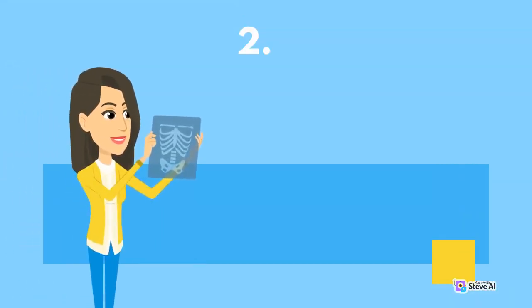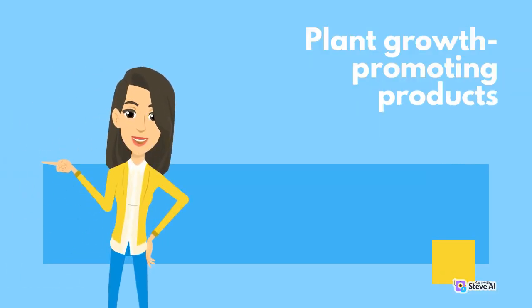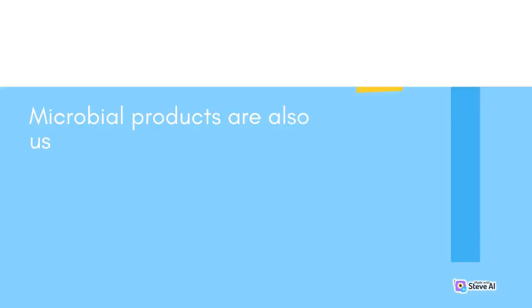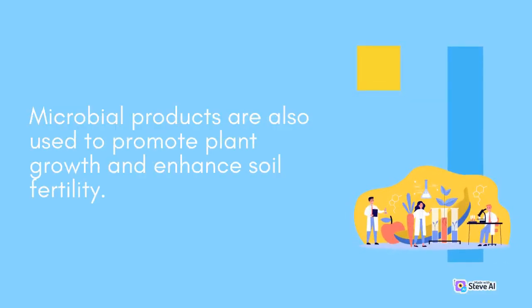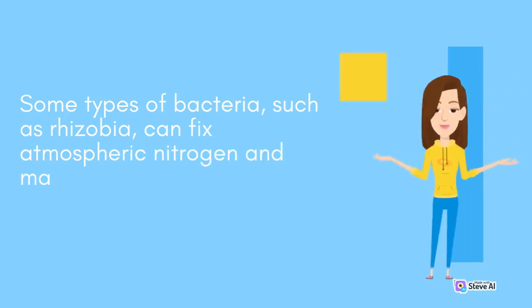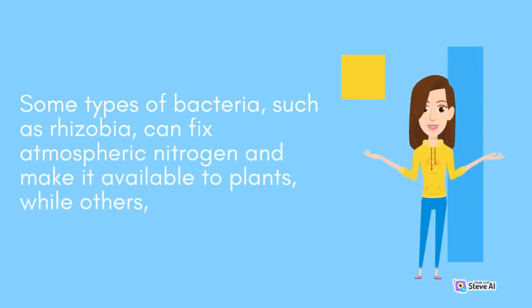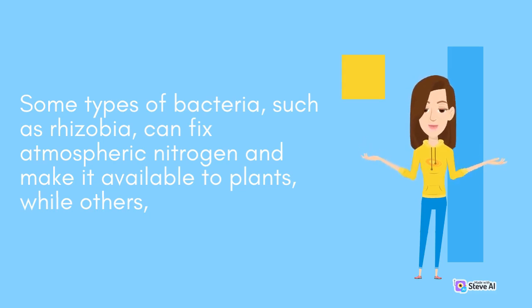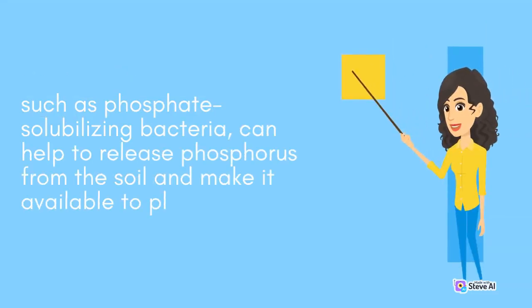2. Plant Growth Promoting Products. Microbial products are also used to promote plant growth and enhance soil fertility. Some types of bacteria, such as rhizobia, can fix atmospheric nitrogen and make it available to plants, while others, such as phosphate-solubilizing bacteria, can help to release phosphorus from the soil and make it available to plants.